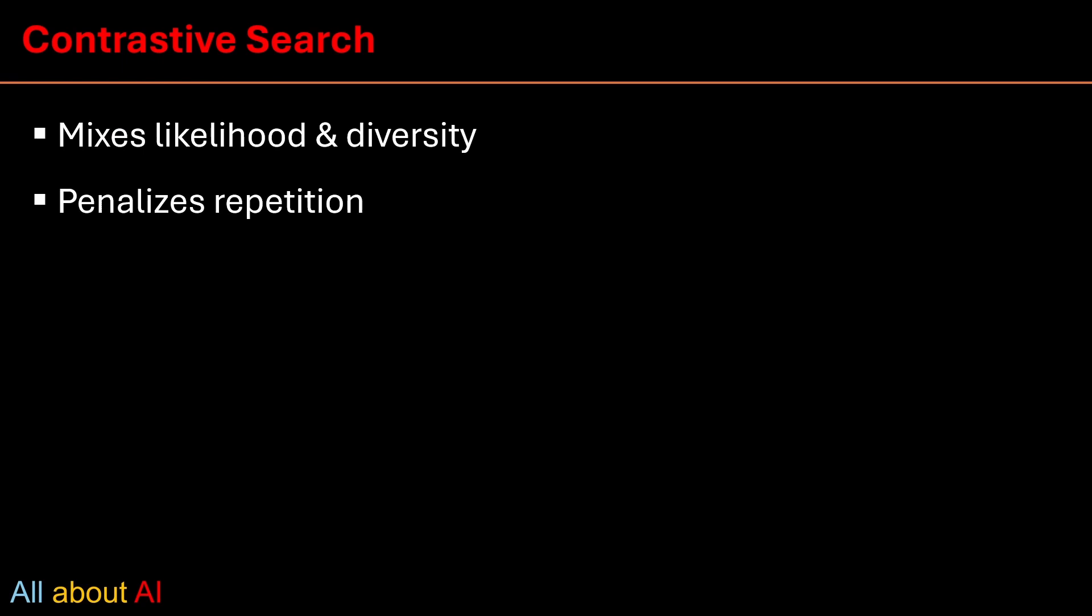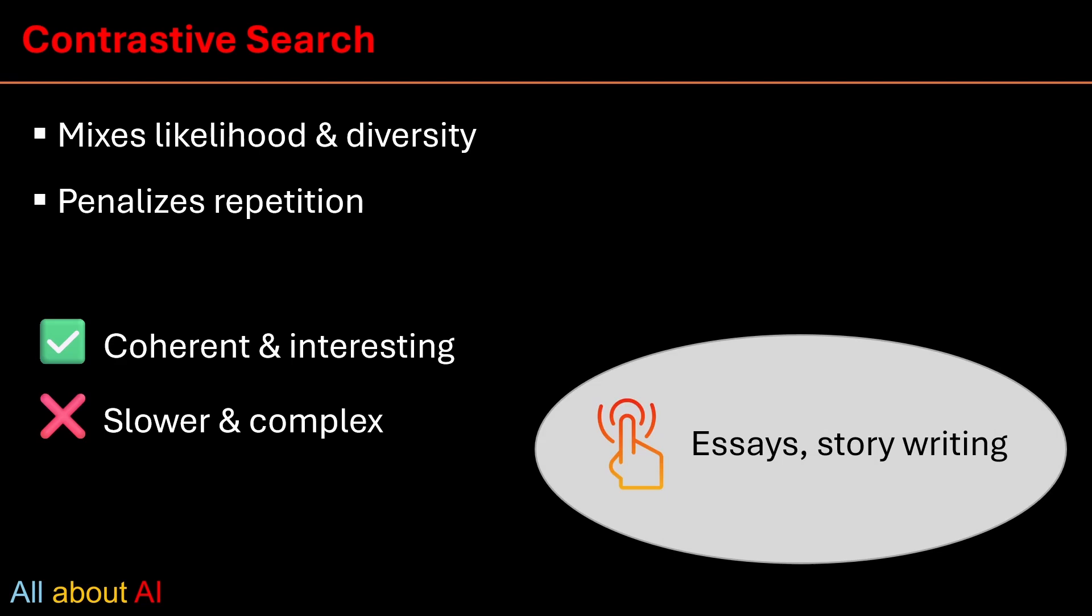Next we have contrastive search. Contrastive search is the new kid on the block which uses diversity. It also asks, does this sound too familiar to what I just said? That way, it avoids repetition and keeps content fresh and focused. It's slower and complex. But it's very good for long-form content like essays and story writing.